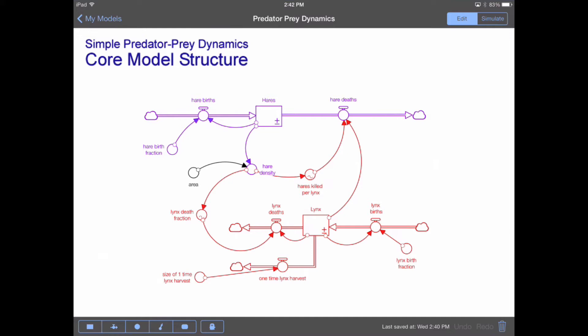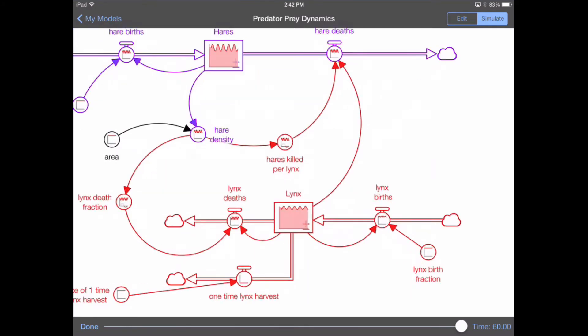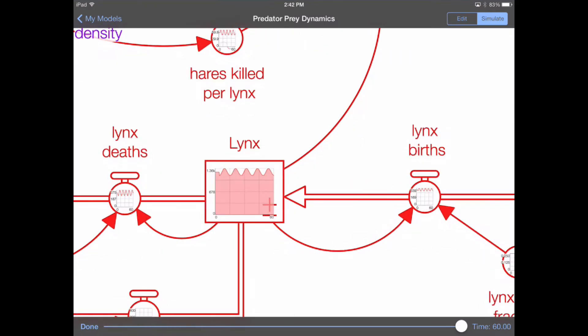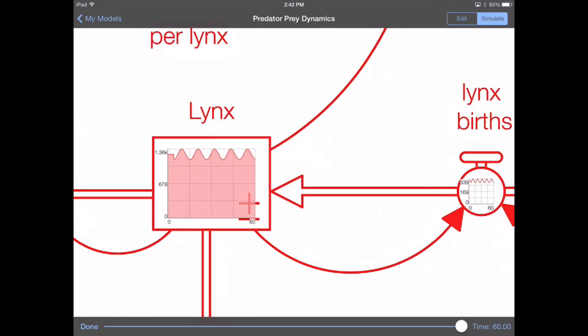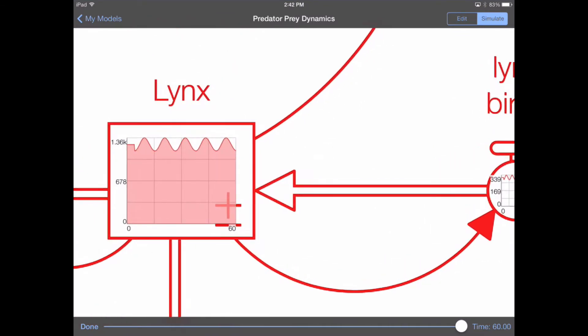So what we're going to do first is run the model, and we do that by tapping on the Simulate button and then tapping here on the Run button. When we run the simulation, we see results directly within the context of the structure, and then we can zoom in on the structure, watching as details come into focus.